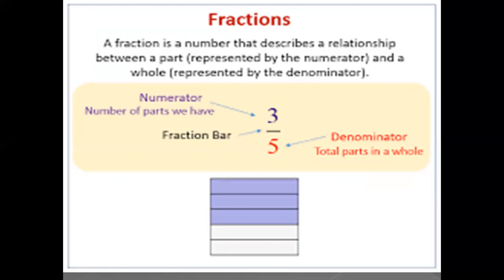You can see a shape below — a block with five lines, and three of those lines are shaded, meaning something is placed in those three. So five is the denominator and three is the numerator. You can also see the fraction bar indicated by the arrow. Let's go to the next slide.